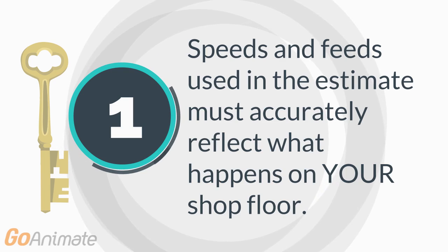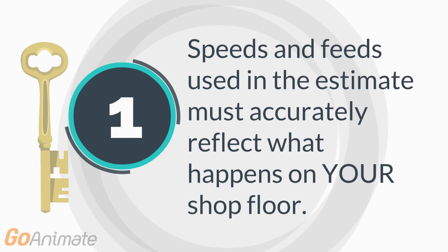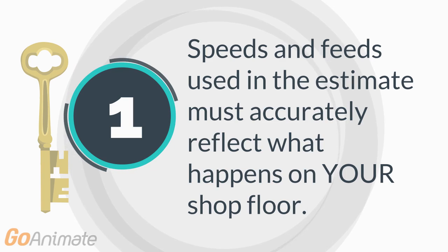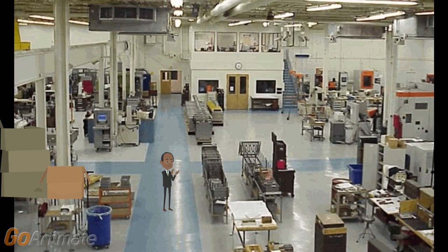Using book knowledge or pie-in-the-sky speeds and feeds that won't be reproduced on your shop floor still leads to inaccurate estimates. Kipware CYC's unique database design ensures that speeds and feeds and the machine parameters for the equipment on the floor reflect what actually takes place on your shop floor. With the many reporting options available and feedback from the shop floor, the more you use Kipware CYC, the more accurate it becomes.